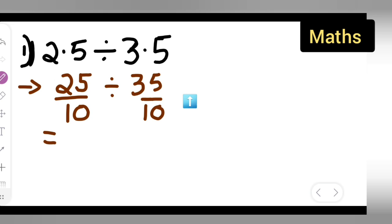Now let us divide this. This will be equal to 25 upon 10. You have to multiply it with the reciprocal of 35 upon 10. What is the reciprocal of 35 upon 10? It is nothing but 10 upon 35.